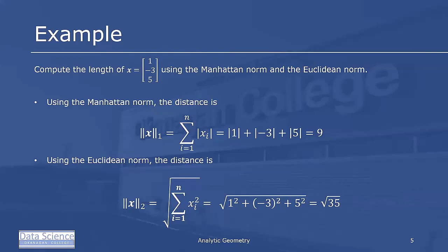In this example, we're going to compute the length of the vector [1, -3, 5] using both the Manhattan norm and the Euclidean norm. Using the Manhattan norm, the norm of x is the sum of the absolute values of the components: |1| + |-3| + |5| = 9. The Euclidean norm is the square root of the sum of the squares: sqrt(1² + (-3)² + 5²) = sqrt(35), which is approximately 6. So the distance from the origin to x differs depending on which norm we use.